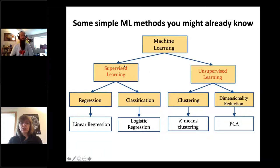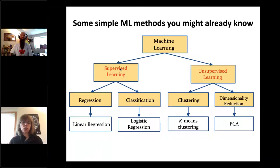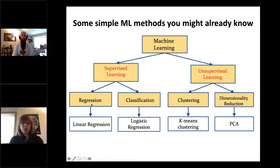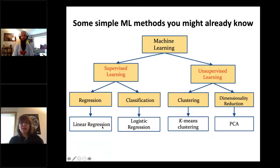Supervised learning is when you have input-output pairs — you know what the exact answer should be. There are two types: regression, where the output is continuous, and classification, where the output is discrete. You probably already know linear regression for regression tasks and logistic regression for classification.